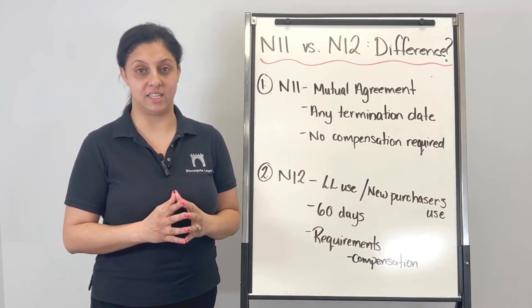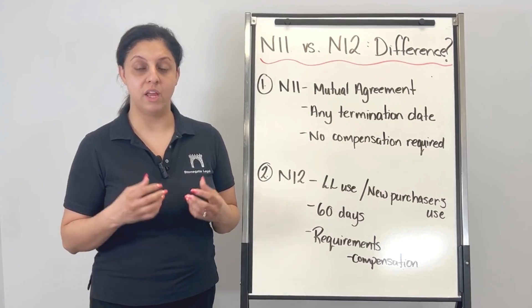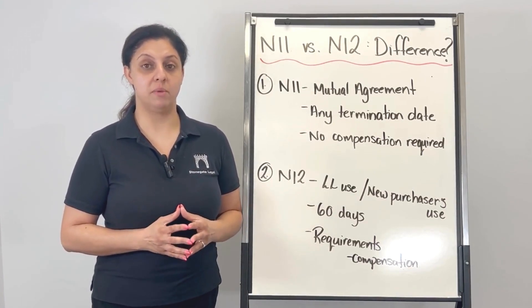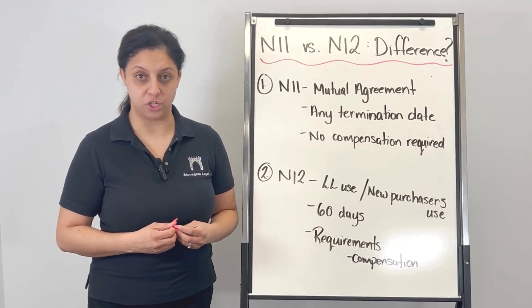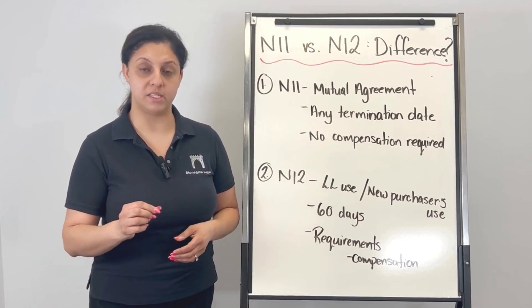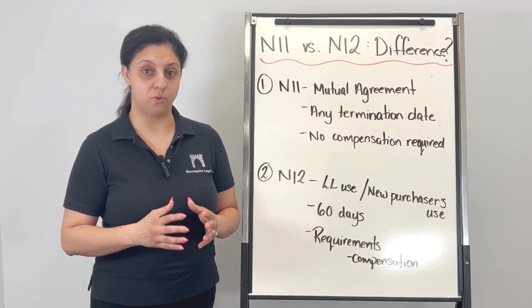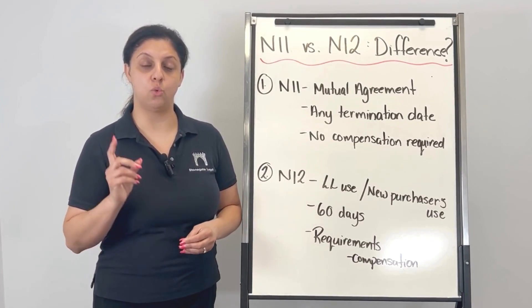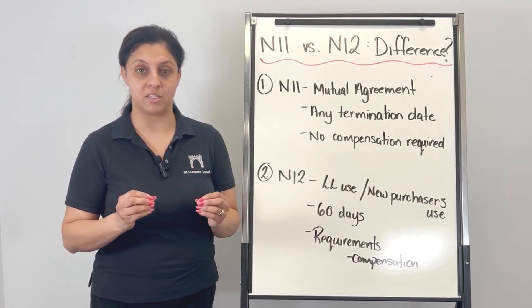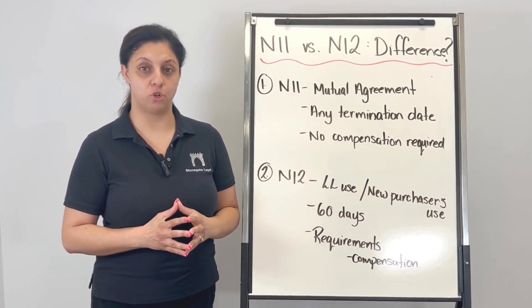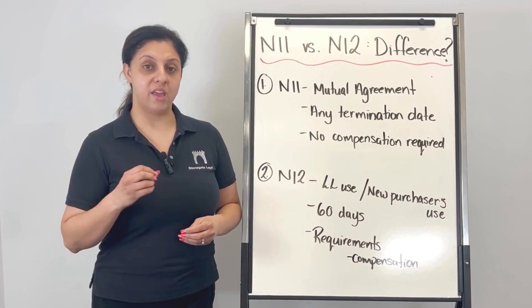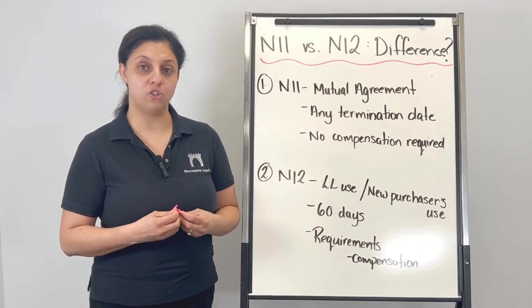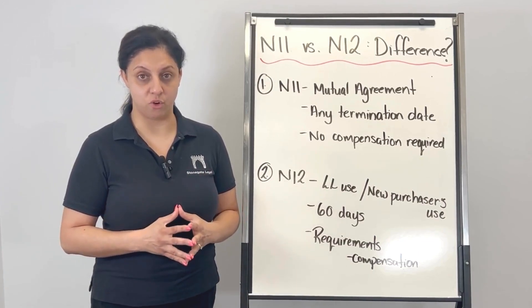Any date less than 60 days on the N12 termination notice is non-enforceable and makes your notice invalid. One of the requirements of an N12 notice is compensation. In accordance with section 48 or 49 of the Residential Tenancies Act, compensation equivalent to one month's rent must be paid to the tenant before the termination date. If any of the requirements of the N12 notice are not fulfilled, that makes your notice invalid, void, and unenforceable.